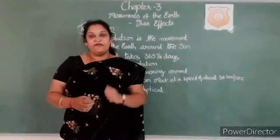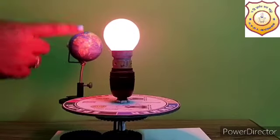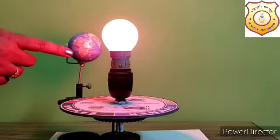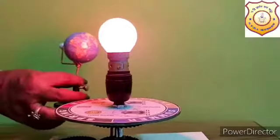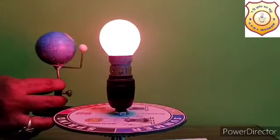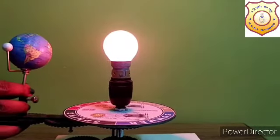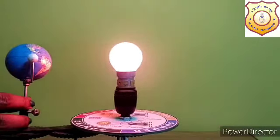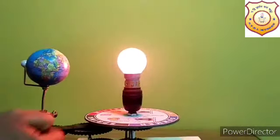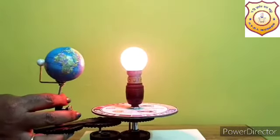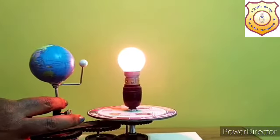I am going to discuss about the revolution. Imagine this bulb as a sun and you can see the globe — this is our Earth. The Earth rotates on its axis and revolves around the sun at the same time. It follows a fixed path at a speed of 30 kilometers per second.